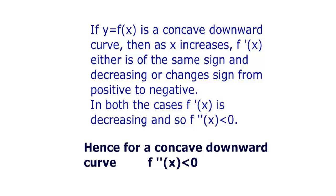If y = f(x) is a concave downward curve, then as x increases, f'(x) either is of the same sign and decreasing, or changes sign from positive to negative. In both cases f'(x) is decreasing, and so f''(x) is less than 0 — that is, the second derivative is negative. Hence, for a concave downward curve, f''(x) < 0. This will be very helpful in deciding the maxima or minima of a function.